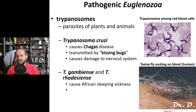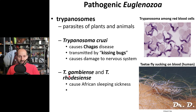African sleeping sickness is caused by Trypanosoma gambiensi and Trypanosoma rhodiensi. This is spread by the tsetse fly, which is a biting insect.